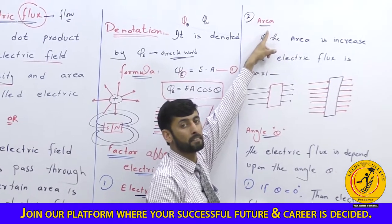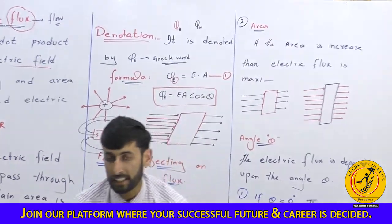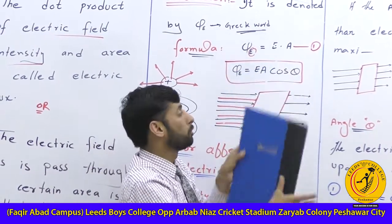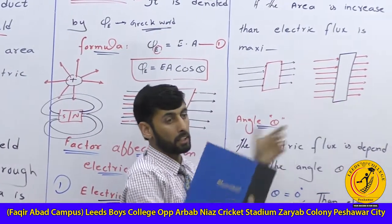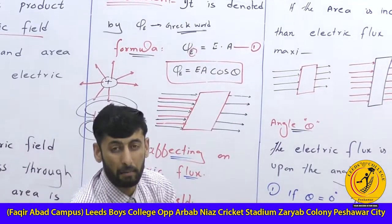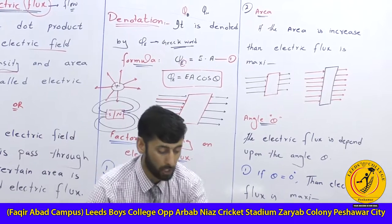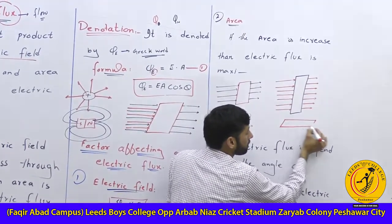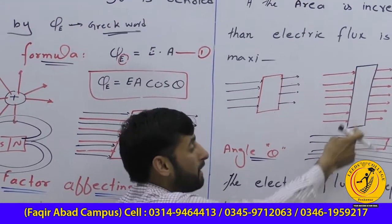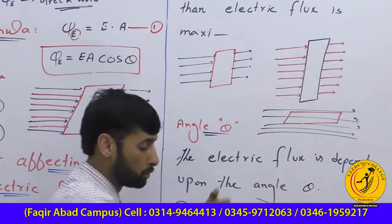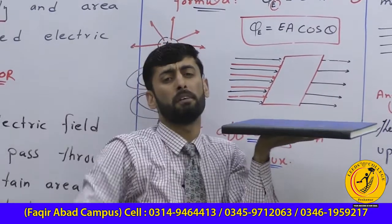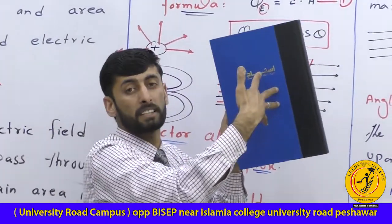The second factor is the area. When the area is perpendicular to the electric field lines, the maximum number of field lines pass through it, giving maximum flux. When the area is parallel to the electric field lines, fewer lines pass through, giving minimum flux. The flux is maximum when the area is perpendicular to the field lines.